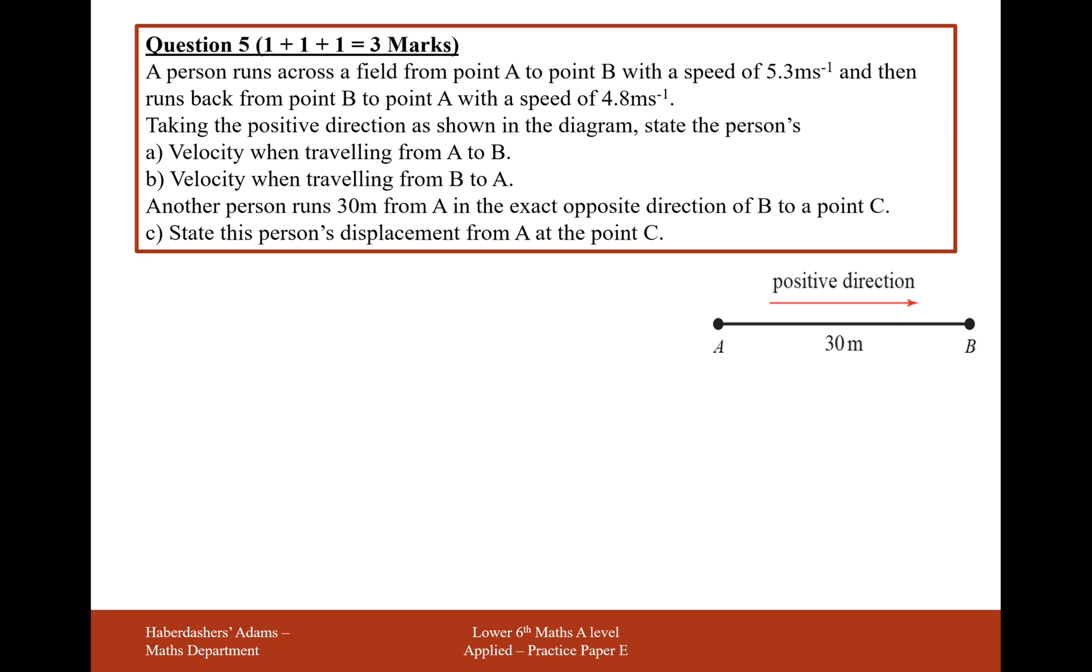A person runs along a field from point A to point B with a speed of 5.3 meters per second. You've got a diagram here and it clearly shows that the distance from A to B, the direction from A to B is in the positive direction. And it runs back from B to A with a speed of 4.8 meters per second. Taking the positive direction shown in the diagram, state the person's velocity from A to B.